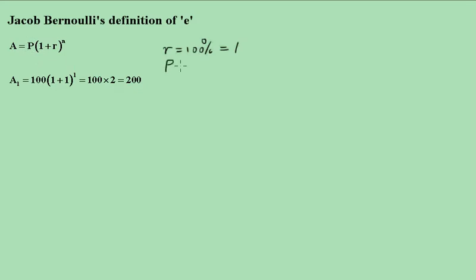So P is $100 and we want to work out what that amount would be at the end of one year. We replace the r with 1, and that just becomes 200, so your amount will obviously double at the end of one year.